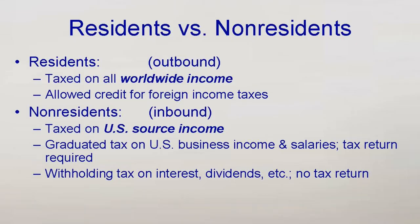By contrast, non-residents are taxed only on income from the U.S. There are two non-overlapping methods of tax. Wages and income earned in a U.S. business are taxed the same as if the foreigner were a resident. However, some deductions are not allowed. Then, dividends, interest, rents, royalties, annuities, and some other kinds of income are subject to a flat 30% tax rate with no deductions allowed. This 30% tax is withheld by the U.S. payor of the income and paid directly to the IRS.